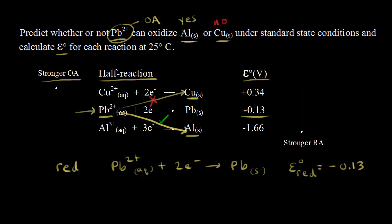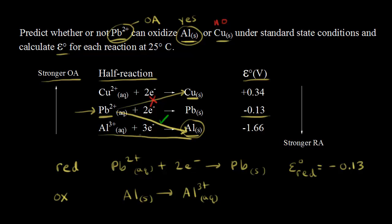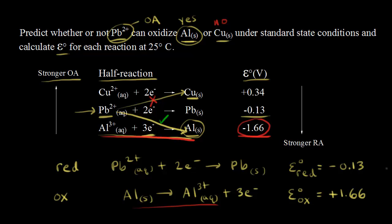Next we write the oxidation half-reaction for aluminum. We reverse the reduction half-reaction: Al(s) → Al³⁺ + 3e⁻. When you reverse a reduction half-reaction to get an oxidation half-reaction, you just change the sign on the standard reduction potential. The standard reduction potential is −1.66 V, so the standard oxidation potential becomes +1.66 volts.